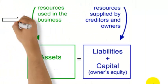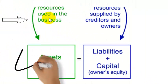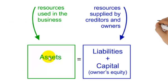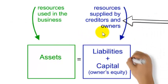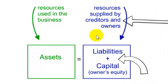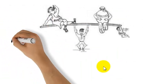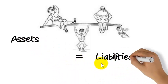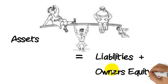Another way of looking at this is in terms of the resources used in a business: the assets have used up all the money, and how they're financed — by liabilities such as creditors and loans from the bank, and of course the owners themselves. To recap: assets equals liabilities plus owner's equity.